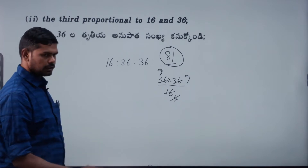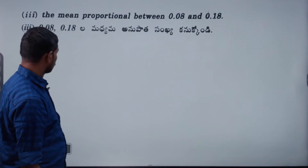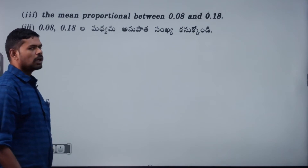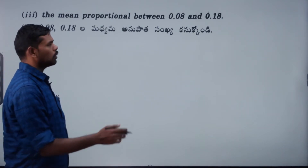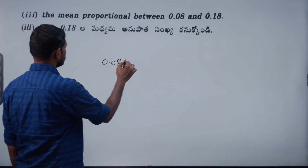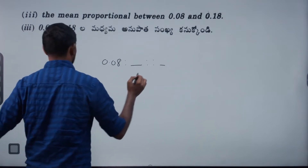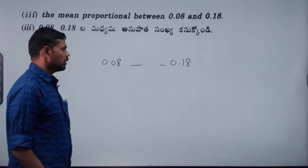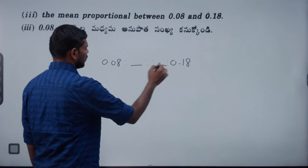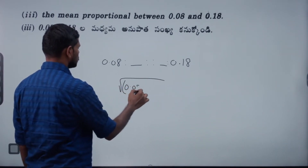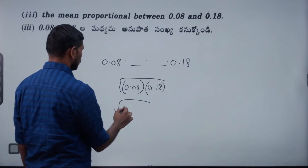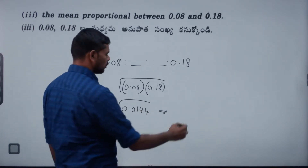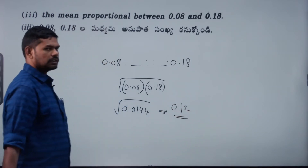The mean proportional between 0.08 and 0.18. The mean proportional between 0.08 and 0.18. So the mean value is root of 0.08 into 0.18 — root of 0.0144. Square root of 144 is 12, with 4 decimals; when I divide, 2 decimals. So answer is 0.12.